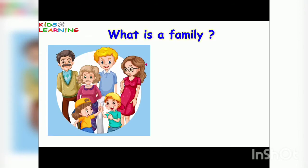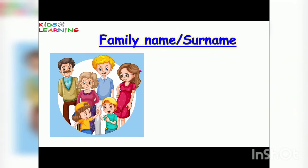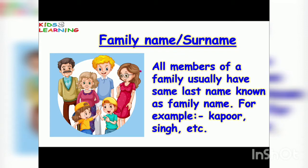What is a family? A family is a group of people living together who are related to each other by birth or marriage. Family name or surname: all members of a family usually have the same last name, known as the family name. For example, Kapoor, Singh, etc.